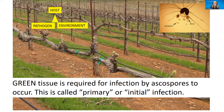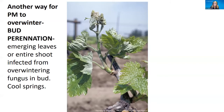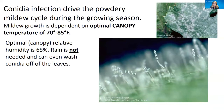This is called primary or initial infection. Another way powdery mildew can overwinter is termed bud perennation — when buds are already infected going into winter, so they emerge in spring already infected with powdery mildew mycelium. This is rare in some areas and seems to occur in regions with cool springs. For the whole rest of the season, conidial infections drive the powdery mildew cycle, dependent on optimal environmental conditions — particularly canopy temperatures.